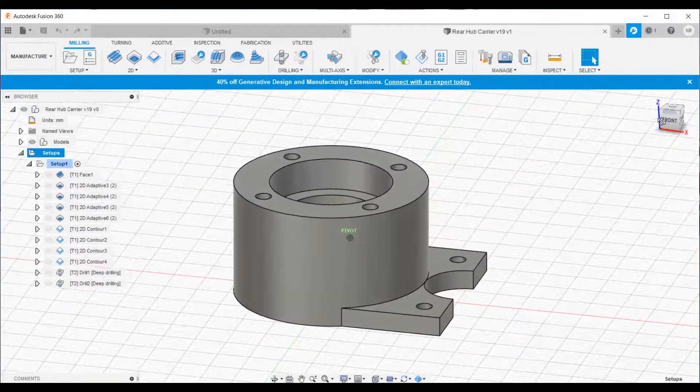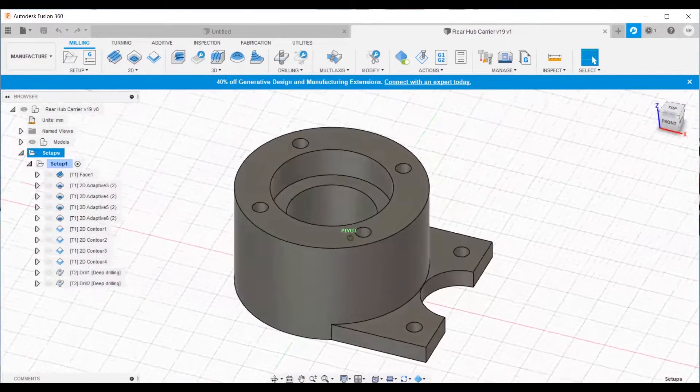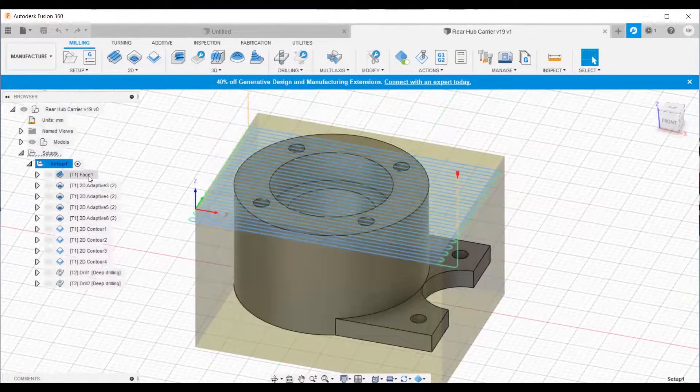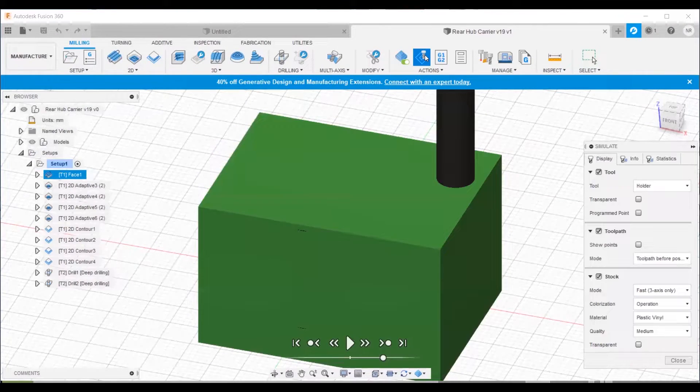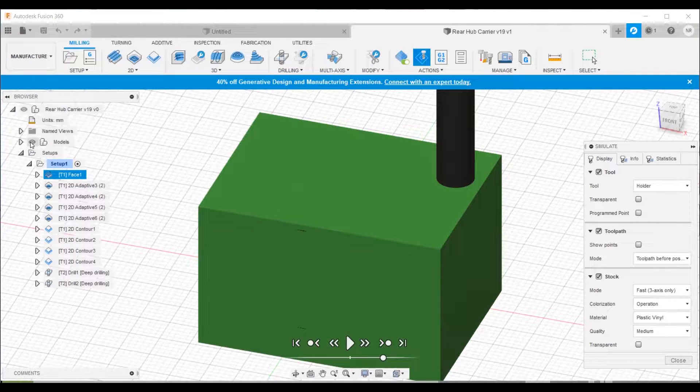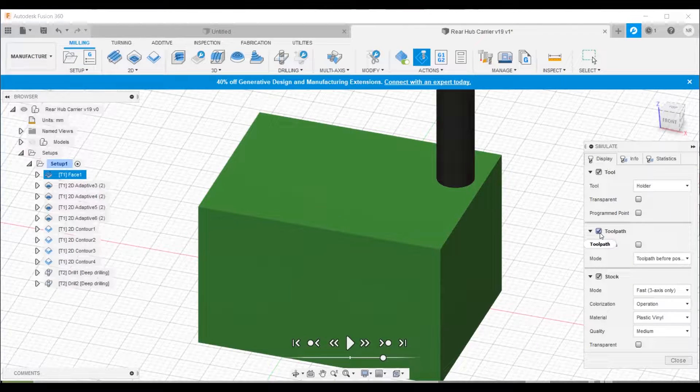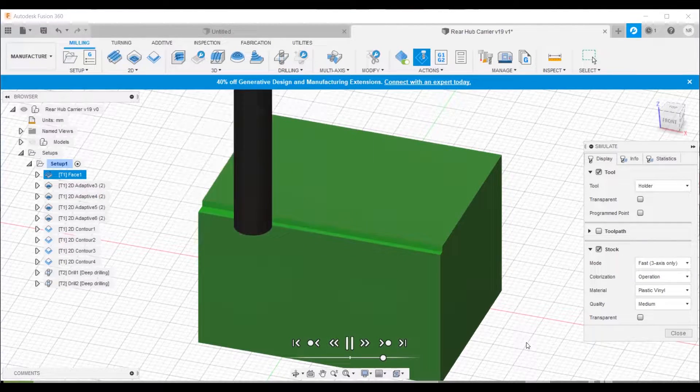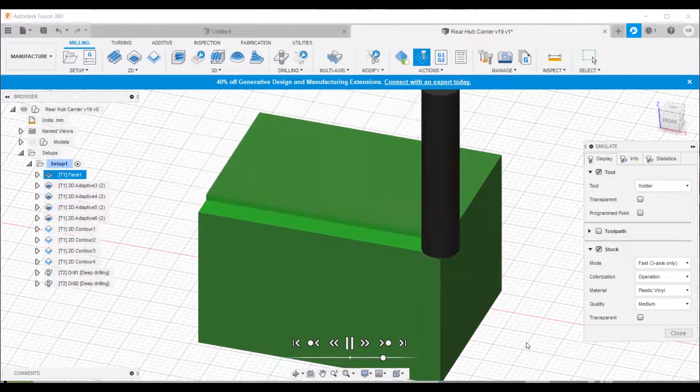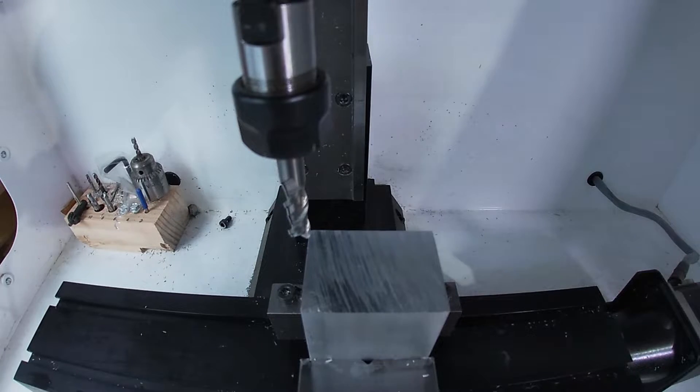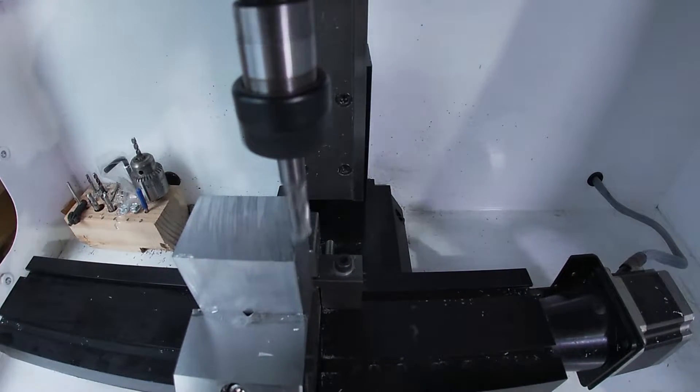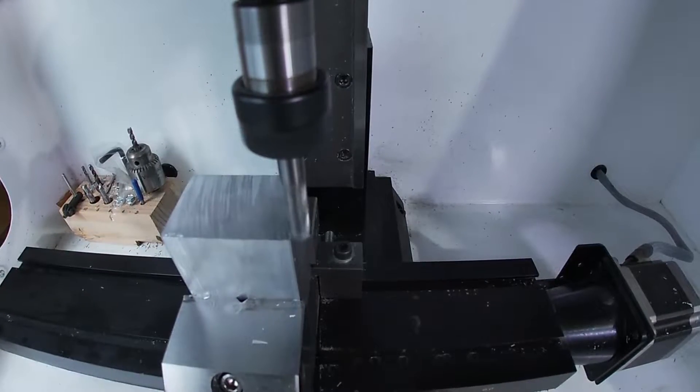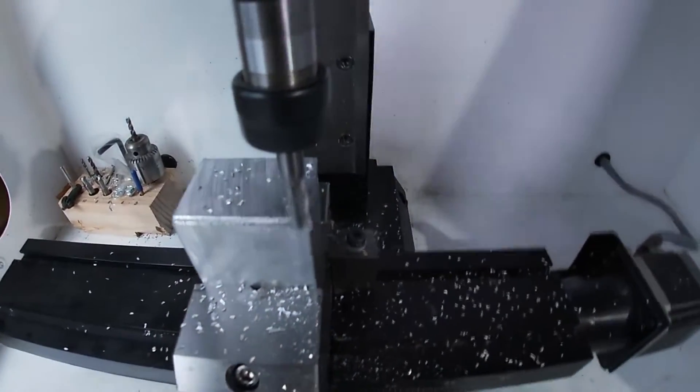I designed my rear hub bearing carrier on Fusion 360 and then designed the toolpaths using the manufacturing tool. Up here we can hit simulate. I started off with my stock material and just took a millimeter face operation off the top of the material. I was using a 6mm carbide end mill at 2,500 RPM and a feed rate of about 208 millimeters a minute.